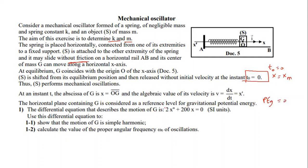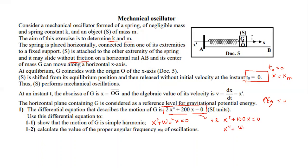The differential equation describing the motion is of the form 2X'' + 200X = 0. To show that the motion of G is simple harmonic, the equation must be of the form X'' + ω₀²X = 0. Dividing the given equation by 2, we get X'' + 100X = 0, which is exactly of that form. Therefore, the motion of G is simple harmonic.